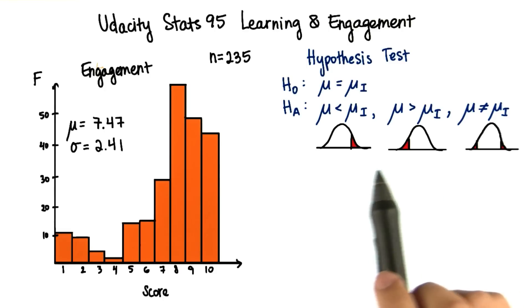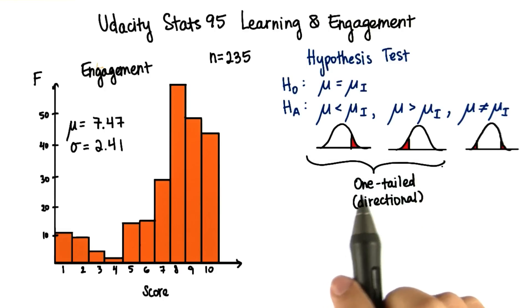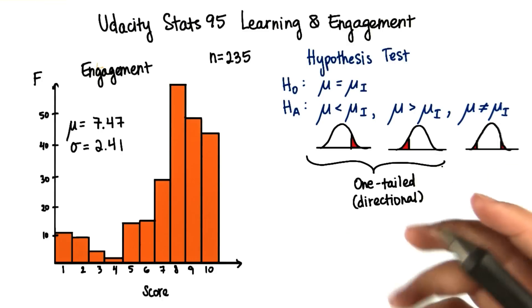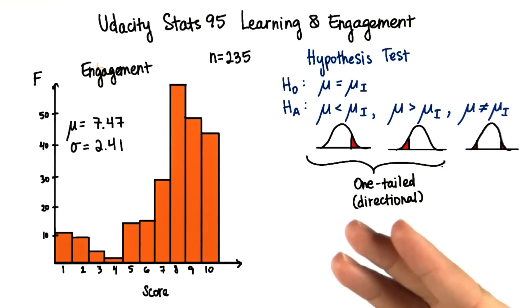We choose a one-tailed or directional hypothesis test when we predict a direction of the treatment effect. For example, when we predict that a song illustrating the concepts in this lesson will increase or decrease engagement.